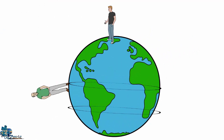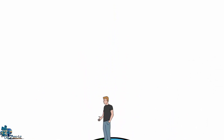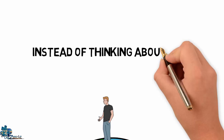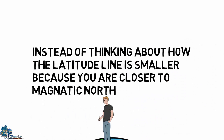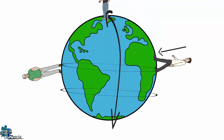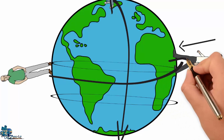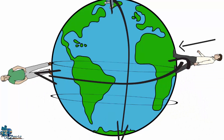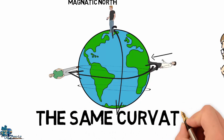This has nothing to do with how we see the Earth from our perspective in real life. Your perspective does not change no matter where you stand on the Earth's surface. You will always be perpendicular to the ground. Instead of thinking about how the latitude line is smaller because you are closer to magnetic north, think of your feet marking the point of your own personal equator. No matter where you walk, your equator is always going to be directly under you, cutting the globe in half. Therefore, you will always see the same curvature or lack thereof.